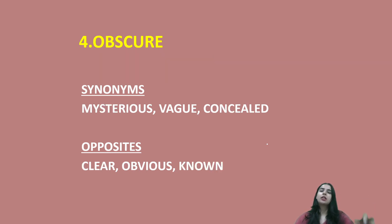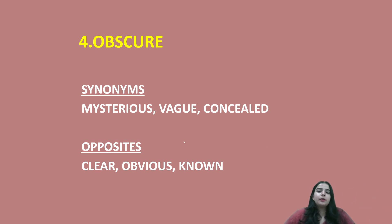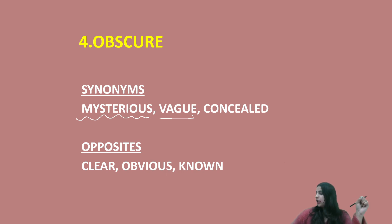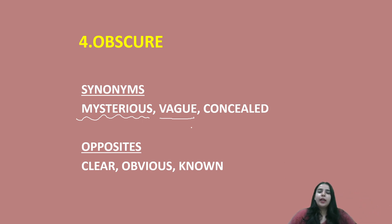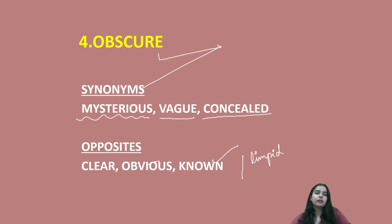Next, let's move to the fourth word: obscure. Obscure ka matlab hota hai koi cheez jo bahut mysterious ho, hidden ho — bahut zyada chupi hoi ho, camouflaged. So synonyms for obscure are: mysterious, vague, concealed — something that is secret, mysterious, and hidden. Opposites will be clear, obvious, known. We also say limpid or lucid for the opposite. You can note down the meaning: secretive, hidden.